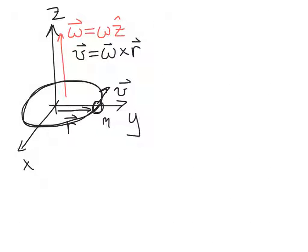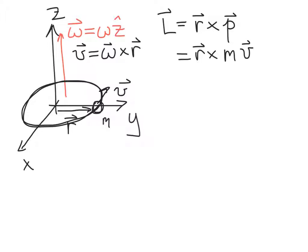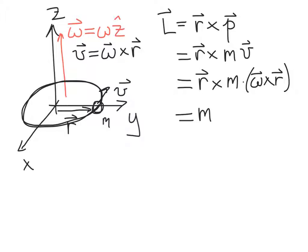We might ask the simple question: what is the angular momentum for this particle? Recall the angular momentum is r crossed into the momentum vector, and the momentum vector is m times the velocity vector. So for our angular momentum vector, we get r crossed into m times omega crossed into r — in other words, L = m times r crossed into (omega crossed into r).